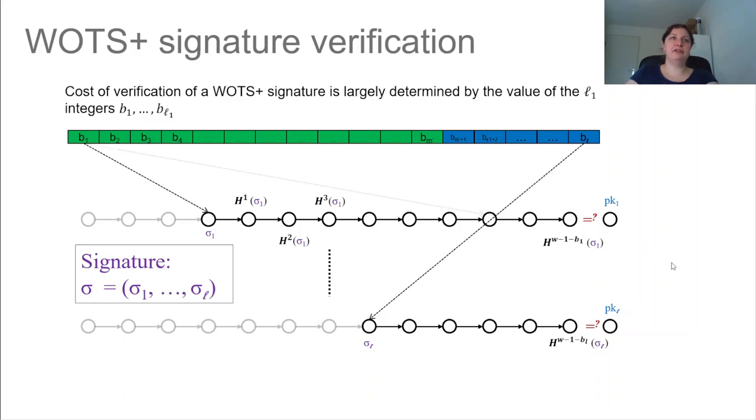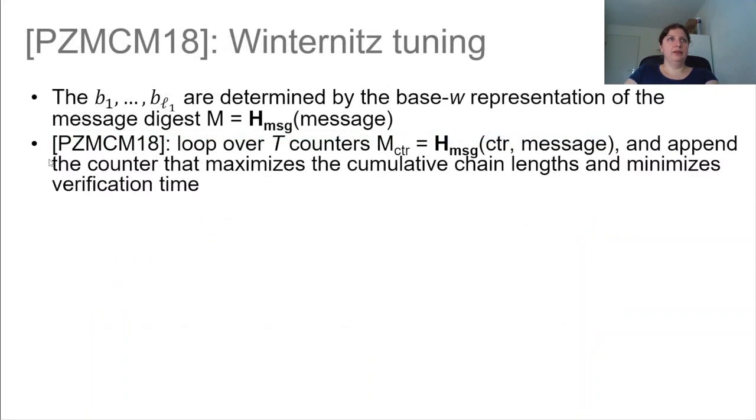Well, this is where Winternitz tuning comes in. So PZMC18 observed that these B1 up to BL1 values are determined by the base W representation of the message digest. And we cannot just change the output of a hash function. But what we can do and what they show in PZMC18 is that by adding a counter in the message hash,